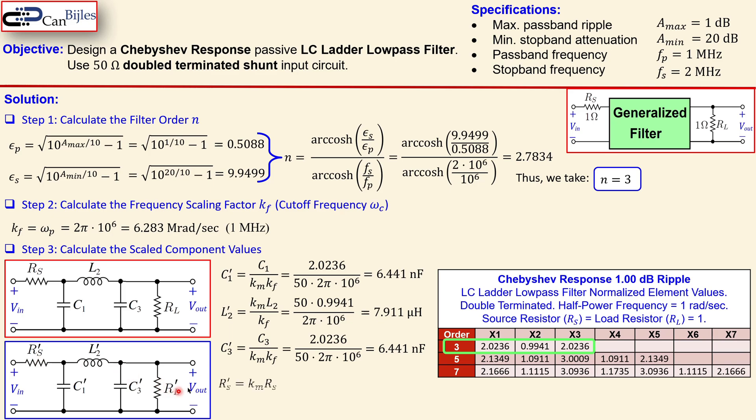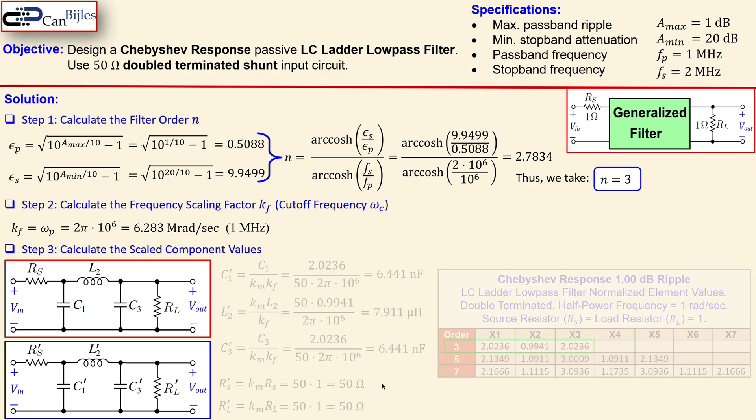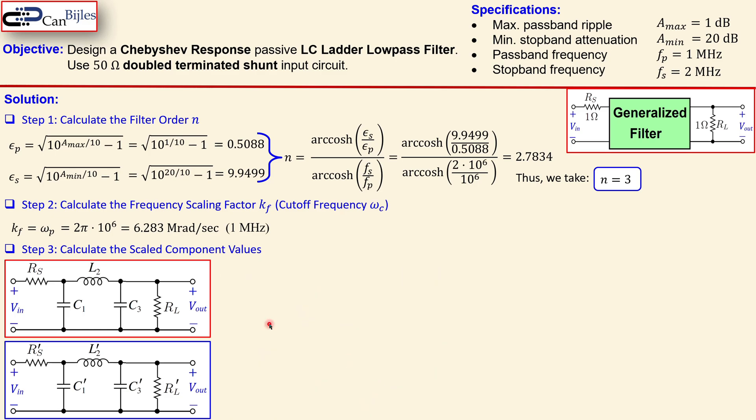RS prime and RL prime are very similar to what we did in the previous videos with the Butterworth response. Just Km times RS and that's 50 times 1 is 50 ohm and the RL prime is also 50 times 1 so it's 50 ohms. Now we have the component values for our circuit.